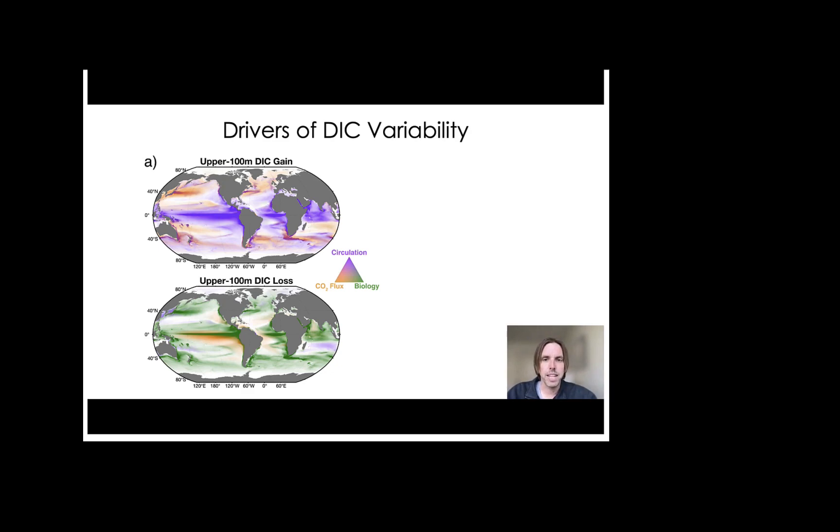So in terms of DIC gain, which is shown in the top panel, you can see that there's a strong increase of DIC in the equatorial and coastal regions that's driven by circulation. And this is primarily from the upwelling of DIC rich waters. There's also DIC gain from air-sea CO2 flux. So that's the orange colors in the top panel. And this results from the uptake of carbon dioxide and is primarily concentrated in subtropical and some polar regions, and also near the western boundary currents.